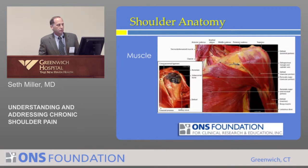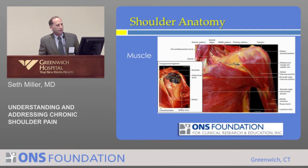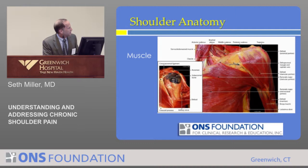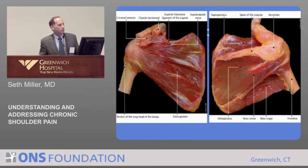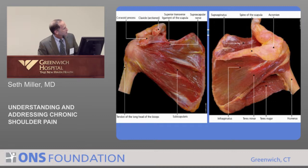Looking at the anatomy of the shoulder, a couple of main things to understand. We have the deltoid muscle and the pectoralis muscle. When we do these surgeries, we go through an interval between the two muscles known as the deltoid-pectoral interval, and that allows us access to the deeper part of the shoulder. Looking at a right shoulder, the muscle in the front is the subscapularis, which we have to go through to get to the joint. These are the other rotator cuff muscles in the back.